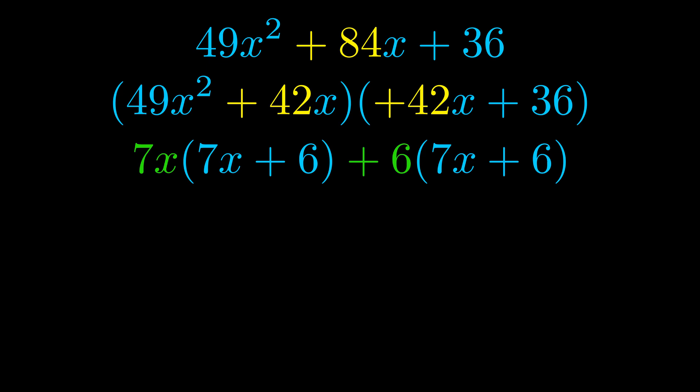Notice also how what remains inside of the parentheses is the same in both cases. The blue values are the same. Those blue values will become one of our factors and we will combine the two green values, the GCFs that we pulled out, to get the other one. And that is our fully factored equation.